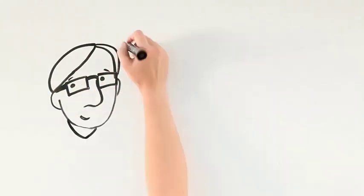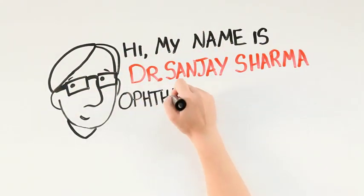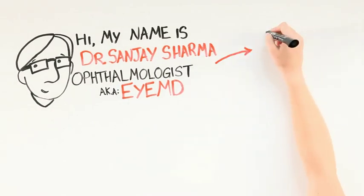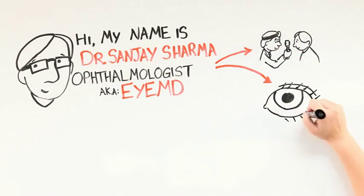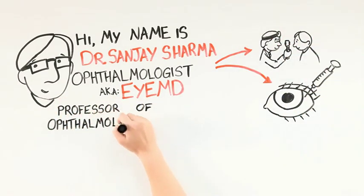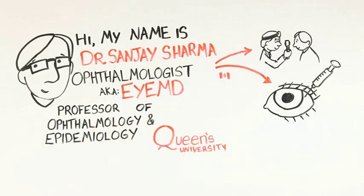Hi, my name is Dr. Sanjay Sharma, and I'm an ophthalmologist, also known as an MD, who diagnoses and treats eye problems. I'm also a professor of ophthalmology and epidemiology at Queen's University.